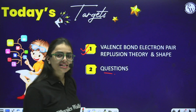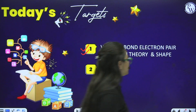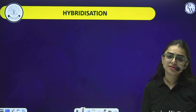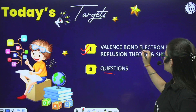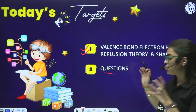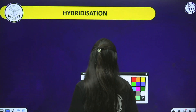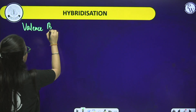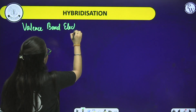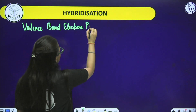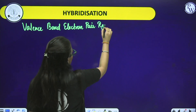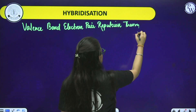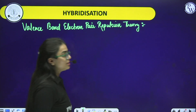Shall we start our today's segment? Starting with a beautiful smile, we are going to do the hybridization process. I want to tell you what valence bond electron pair repulsion theory actually is. Let us focus upon this topic first.